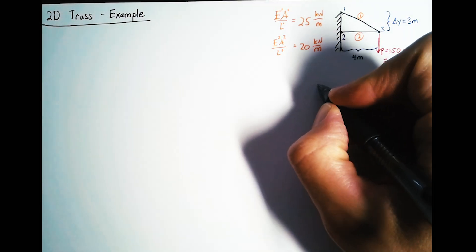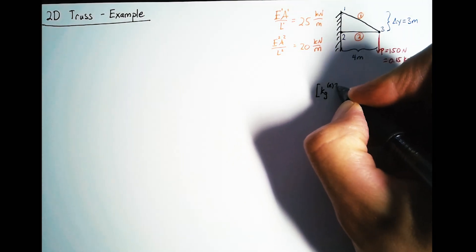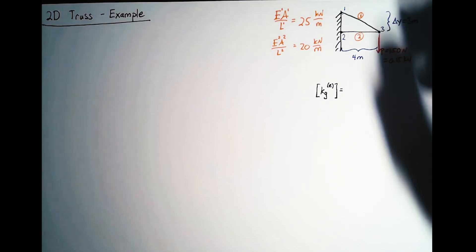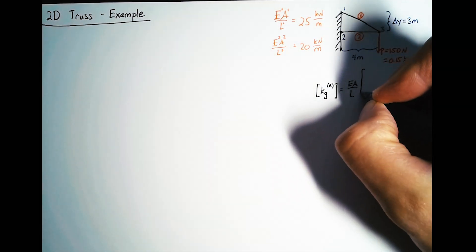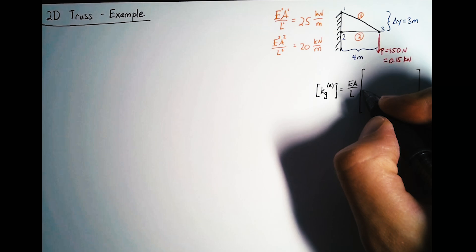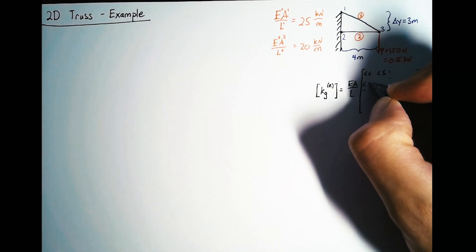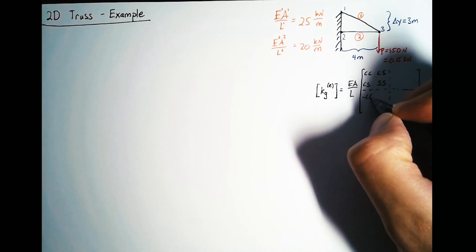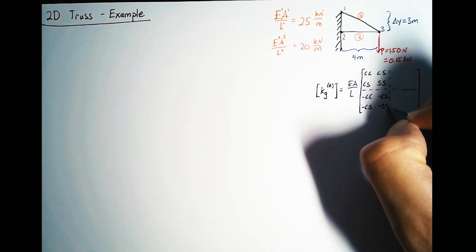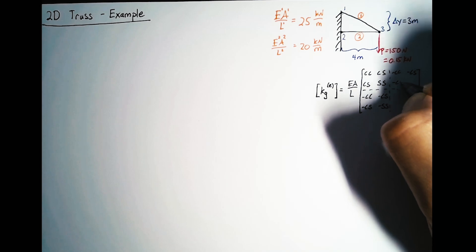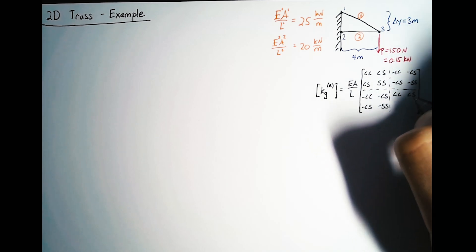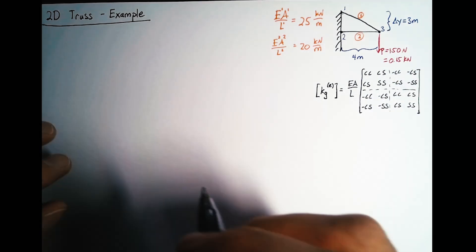As a reminder, let's get our stiffness matrix for an element ready so that we can use that for these two elements. That stiffness matrix is a 4 by 4, and these C's and S's are cosines and sines.